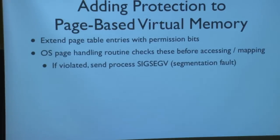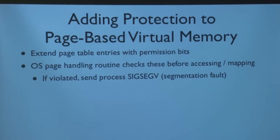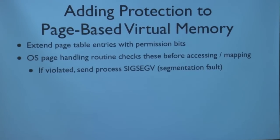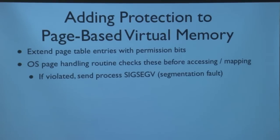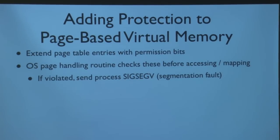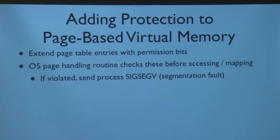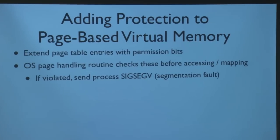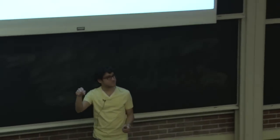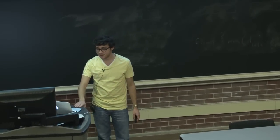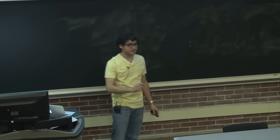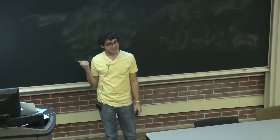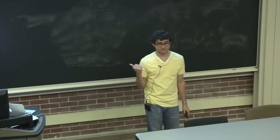In terms of protection like we talked about for virtual memory, this was modified to allow more expression from the OS by adding certain permission bits to page table entries — read-only, execute, read-write, shared. The OS inspects those bits and ensures that invalid accesses don't occur. When one does, that's when we send the segmentation fault to the program.